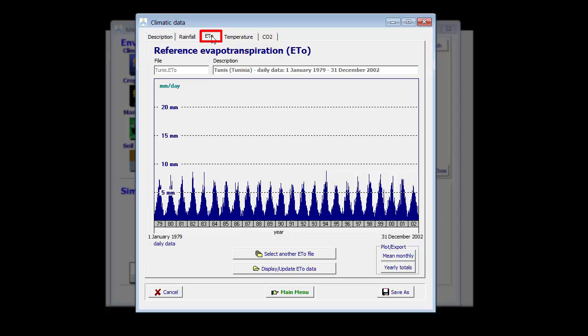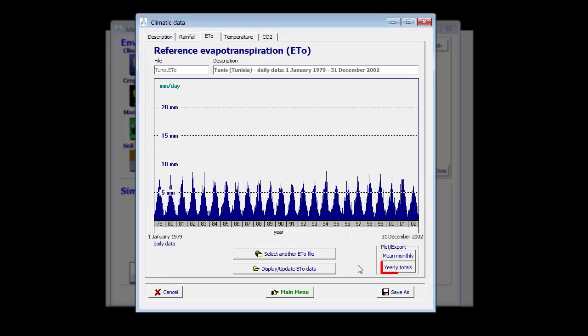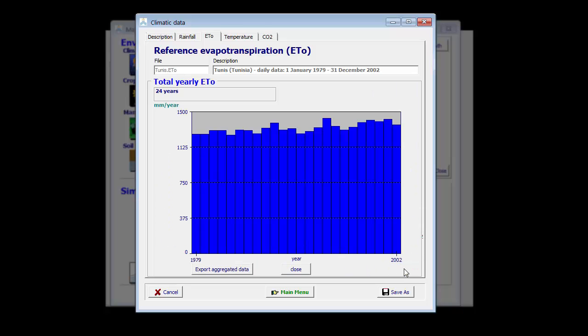In the ET node tabular sheet, we see the ET node data. Once again, it can be plotted as mean monthly data or as yearly data. Here, the variation from one year to the other is much smaller than the variation of the rainfall.